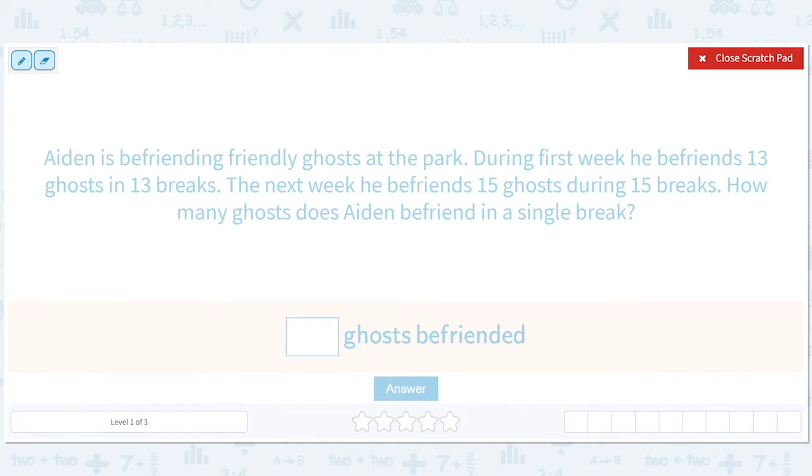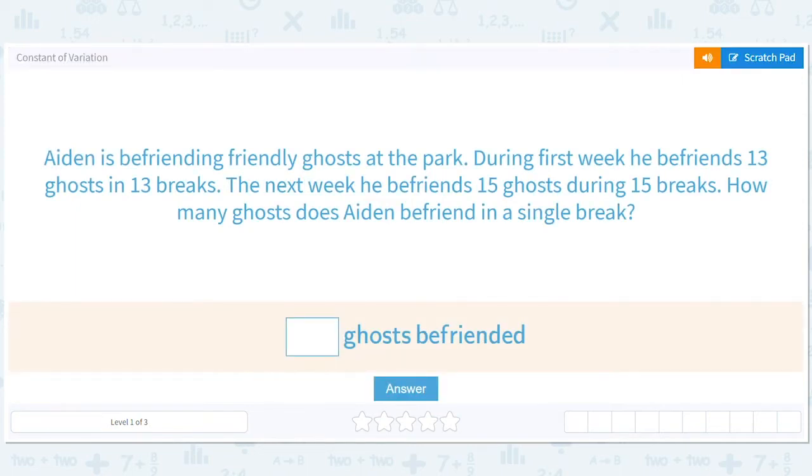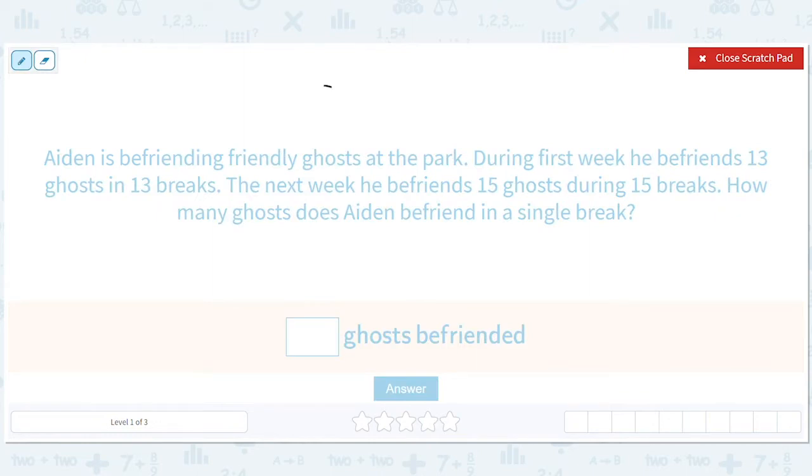So let's think about what the two things are and how they are varying together. Aiden is befriending friendly ghosts at the park. During the first week, he befriends 13 ghosts in 13 breaks. So we have ghosts and breaks. Those are the two things. It's 13 ghosts, 13 breaks. And there's also 15 ghosts and 15 breaks. How many ghosts does Aiden befriend in a single break? So the question is, if there's only one break, what's this? You can see the pattern.